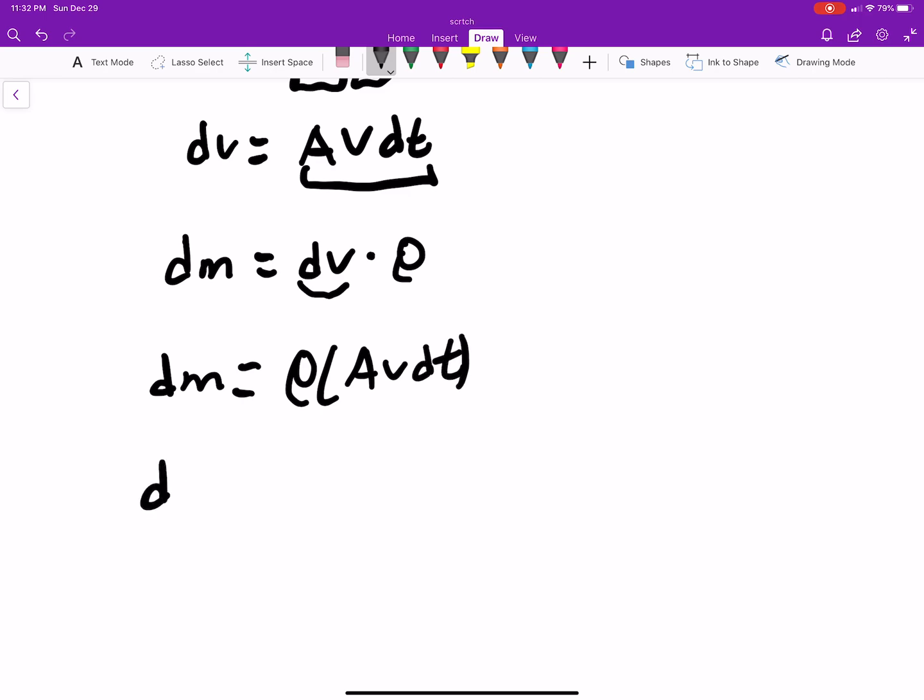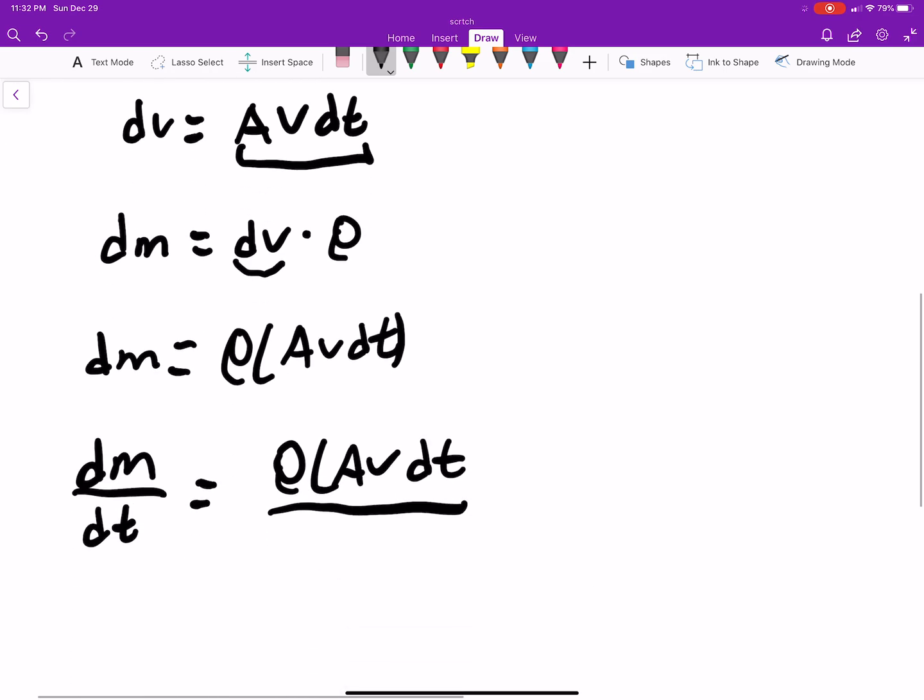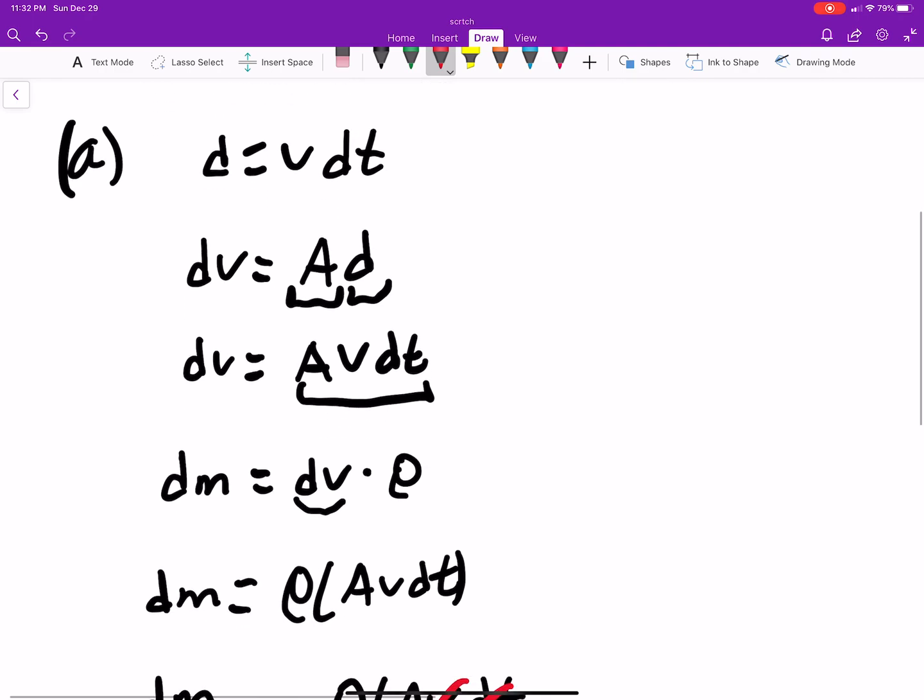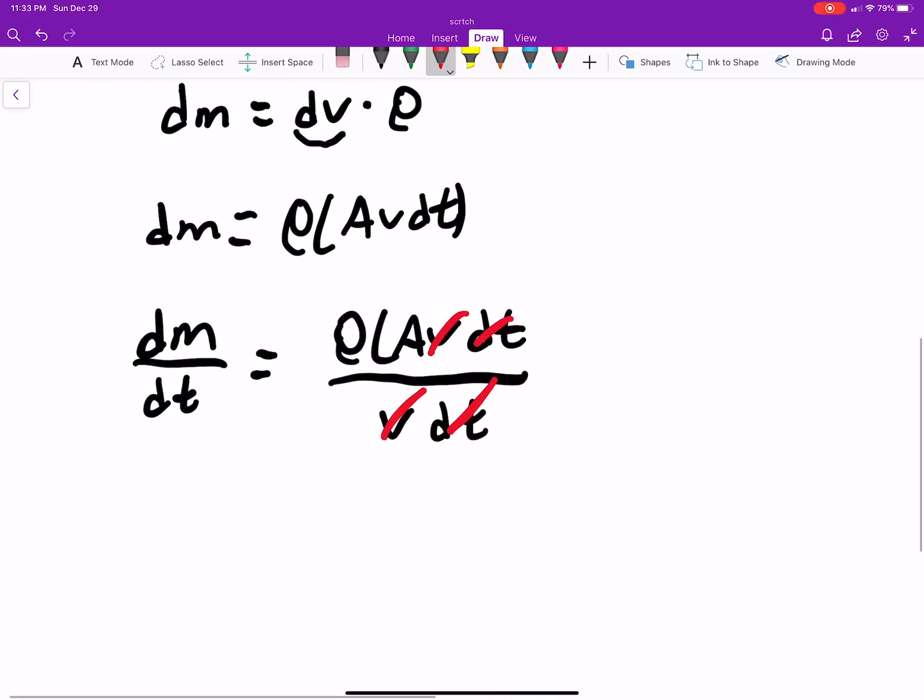So dM by dt is this stuff divided by dt, which is ρAV dt. So this all drops. I'm sorry, dt. Yeah, didn't mean to drop that. There shouldn't be a V here.